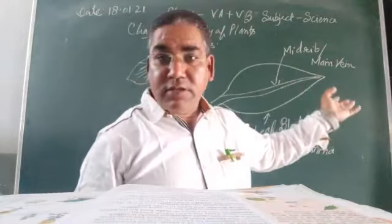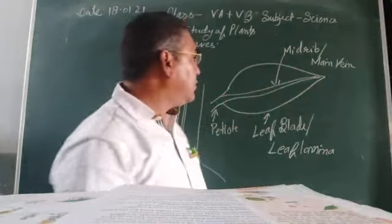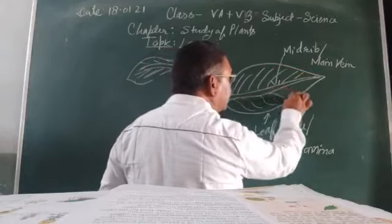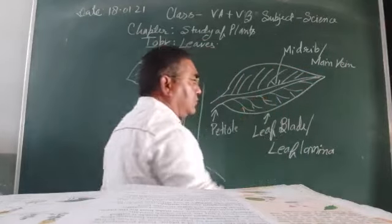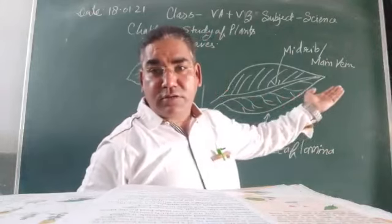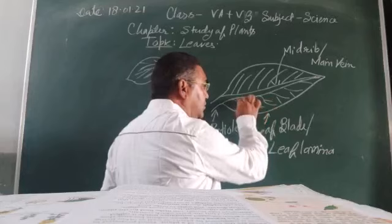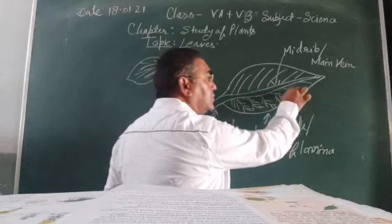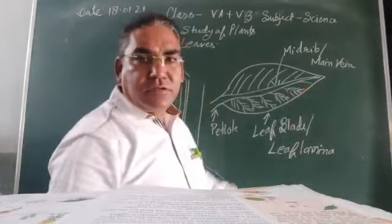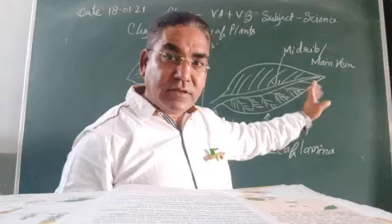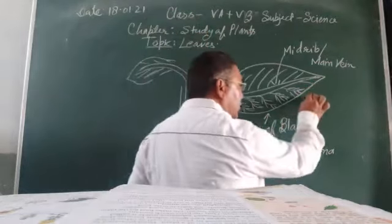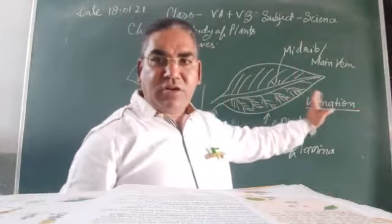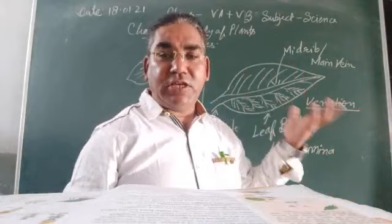Along with the main vein, there are a number of small branches. These veins make a network. The arrangement of veins in a leaf is known as venation, or leaf venation. We will discuss this in more detail in higher classes.